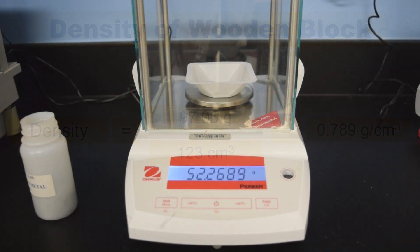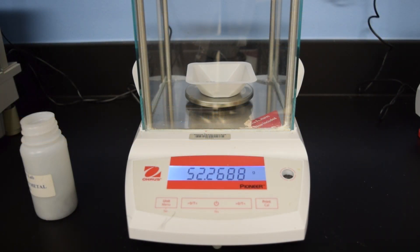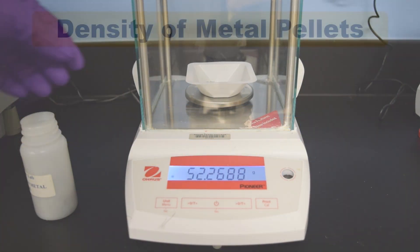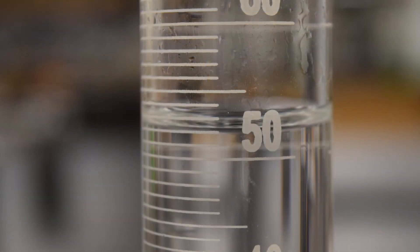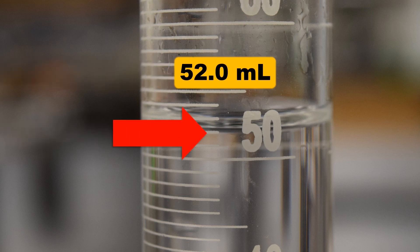Now, for the irregularly shaped metal pellets, measuring the mass on an analytical balance is simple. But how would we measure the volume of these metal pellets? We can start with a 100 milliliter graduated cylinder. Recall from the volumetric video, we measure the volume of the 100 milliliter cylinder to every milliliter and estimate the tenth value.